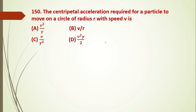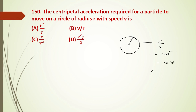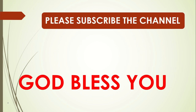The last question: the centripetal acceleration required for a particle to move on a circle of radius R. It acts along the radius towards the center with value V²/R, or equivalently Rω², or ω×V. In vector form, it is written as ω cross V. The answer is A. Dear students, try to do more conceptual analysis with each chapter. God bless you. Take care.